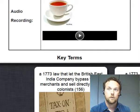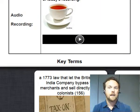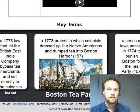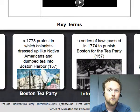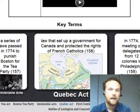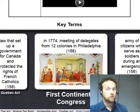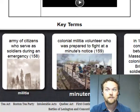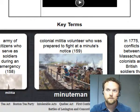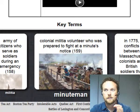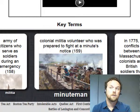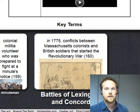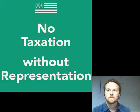Now let's look at our key terms for today. We'll be talking about the Tea Act, the Boston Tea Party, the Intolerable Acts, and the Quebec Act. We'll also talk about the First Continental Congress, a militia, and specifically the Minutemen, which were part of the original colonial militia. And then we'll end today talking about the Battles of Lexington and Concord.